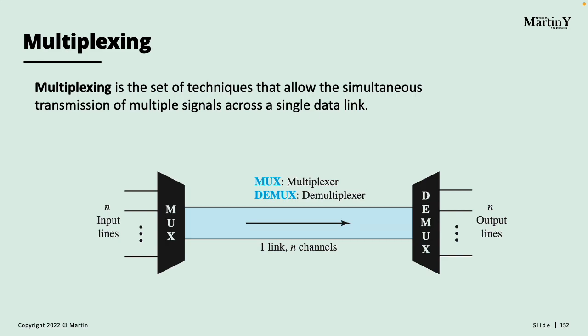When we want to send multiple signals through one cable, we have a problem. For example, if I want to send some voice data, the human voice has frequencies between zero and four hertz — so the bandwidth is four hertz. If I want to send multiple voice messages through one cable, all of those signals are going to be from zero to four hertz, so they're going to interact with each other and we cannot do that.